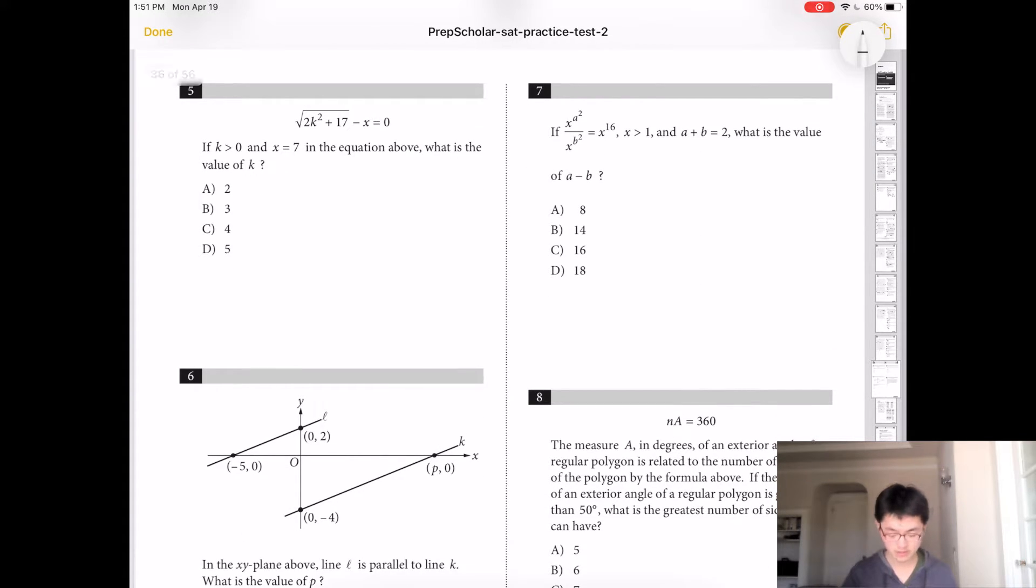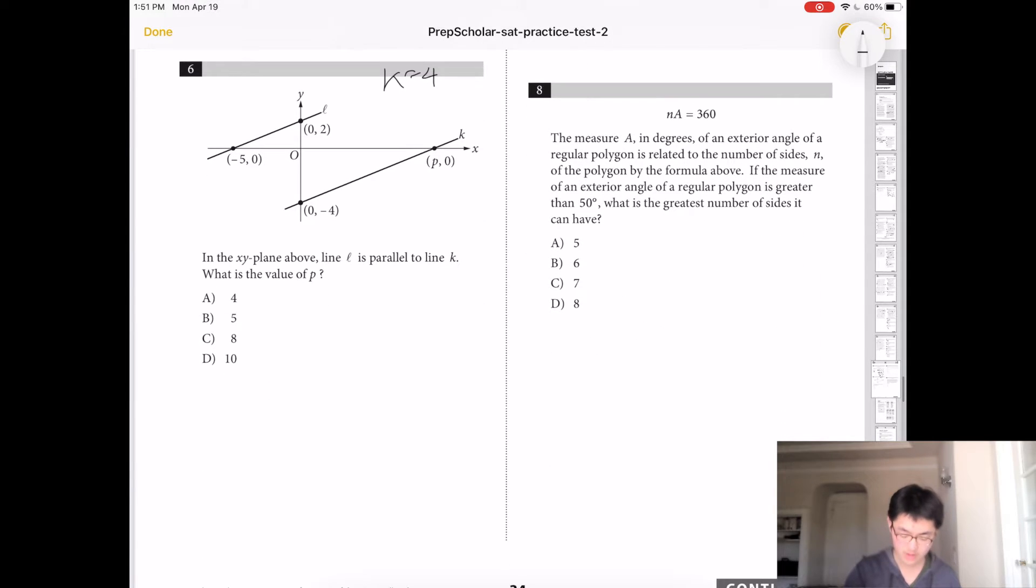And number 5, if k is greater than 0 and x equals 7, what's the value of k? So it's 2k squared plus 17 equals 7. 2k squared plus 17 equals 49. 2k squared equals 32. k squared equals 16. And k equals 4. The answer is C.